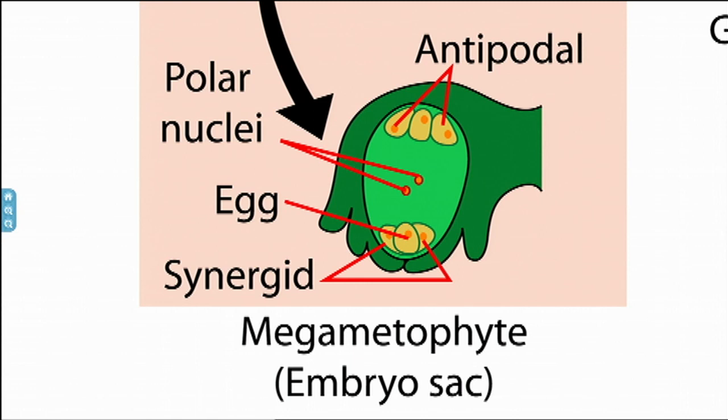But this highlights a problem. We have an egg inside an ovule, inside an ovary, inside a carpel tissue, inside a flower, and we have sperm inside pollen on a different flower somewhere else. How on earth do plants have sex?